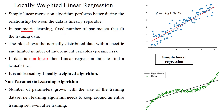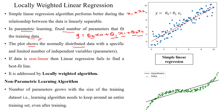In parametric learning, a fixed number of parameters are fit with the training data. For example, y = theta_0*x_0 + theta_1*x_1 + theta_2*x_2 — here x_1 and x_2 are the two features, so the number of parameters is also fixed. The given plot shows normally distributed data with one feature, having parameters theta_1 and intercept theta_0.